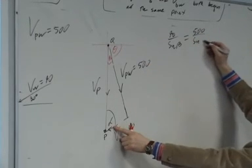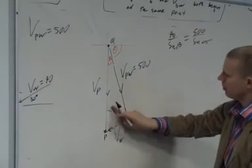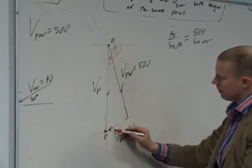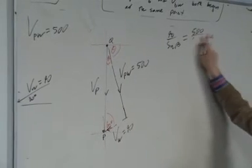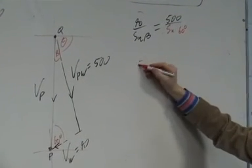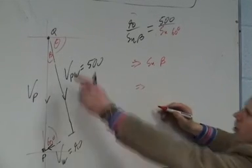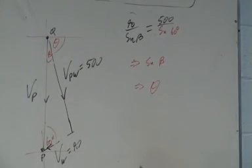We call this guy here theta, but to get that I might have to work out what beta is there. If I call this guy here alpha, I can say 90 over sine beta equals 500 over sine alpha. Alpha is the sine of 60 degrees. That means I work out what sine beta is, and if I work out what beta is, I can work out what theta is.